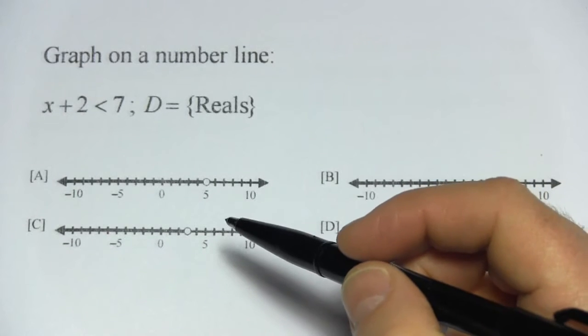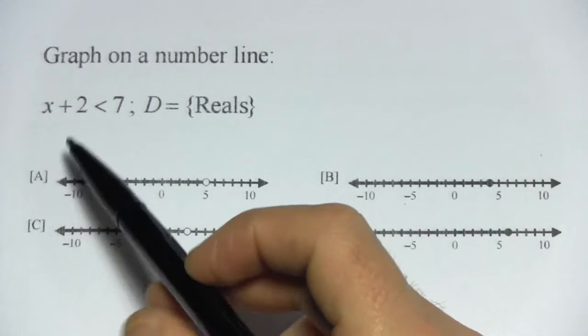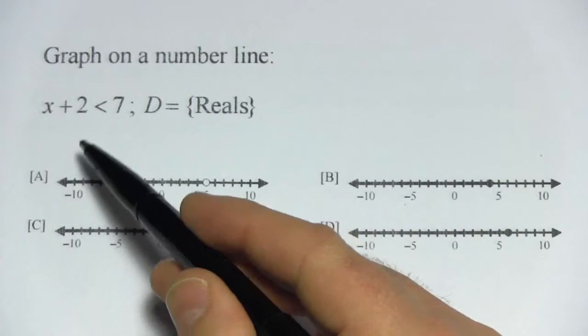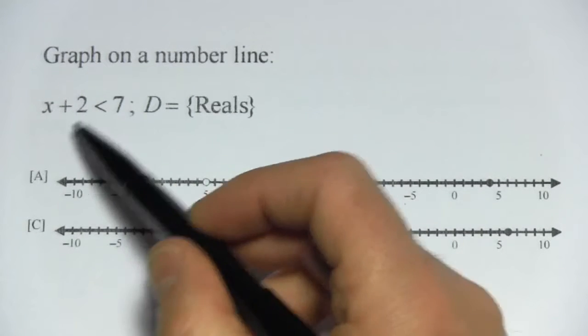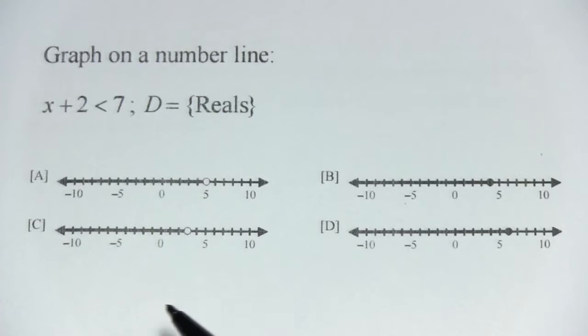In these problems, we are graphing inequalities on the number line and there's a little bit of work to do because it doesn't just say x is greater than or less than or greater than or equal to or less than or equal to something. There's some other numbers hanging out here, so we're going to have to do a little bit of algebra. That's one of the tricks.